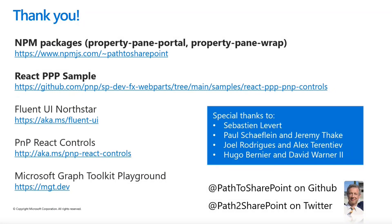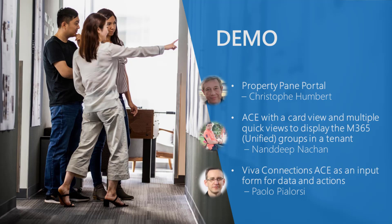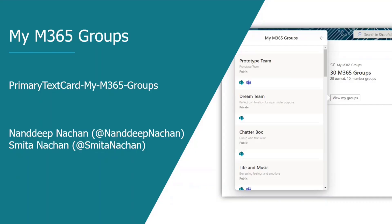We're going to move to Nandeep with ACEs card view and multiple quick views to display the M365 groups in a tenant. Thank you very much for having me here to showcase our sample on Microsoft Viva Connections adaptive card extension exploring Microsoft 365 groups. This sample shows how to build an adaptive card extension with a card view and multiple quick views to display the Microsoft 365 unified groups in the tenant of which the currently logged-in user is an owner or member.